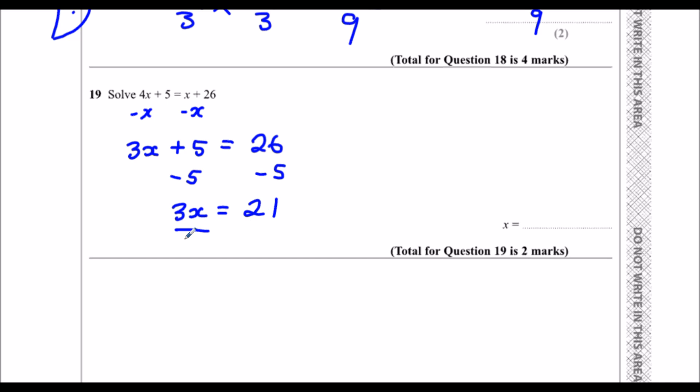Finally, I've got 3x = 21. To find out what 1x is, I divide it by 3. So I divide both sides of the equation by 3. 21 divided by 3 is 7, so x must be 7.